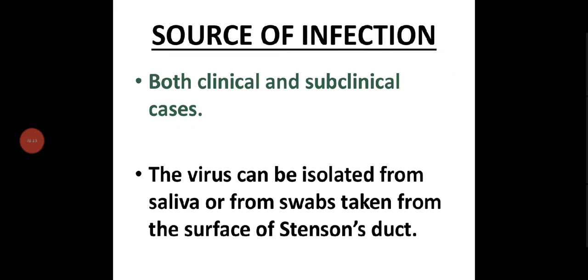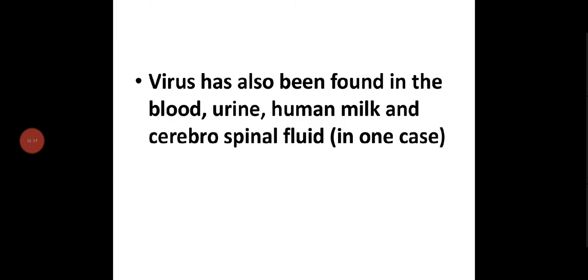Both clinical and subclinical cases can transfer the infection. The virus can be isolated from the saliva or from swabs taken from the surface of Stensen's duct. The virus has also been found in blood, urine, human milk, and cerebrospinal fluid.